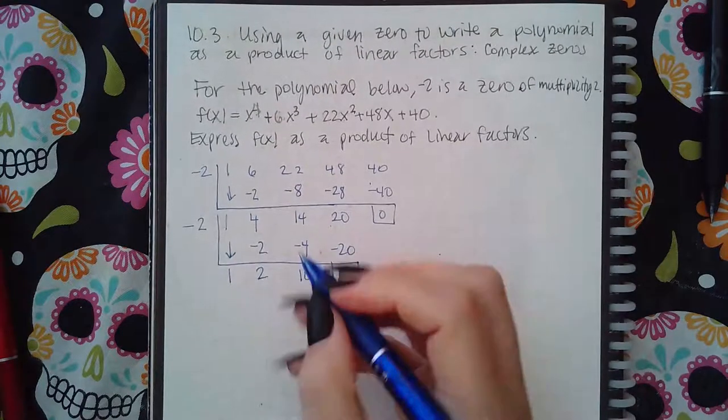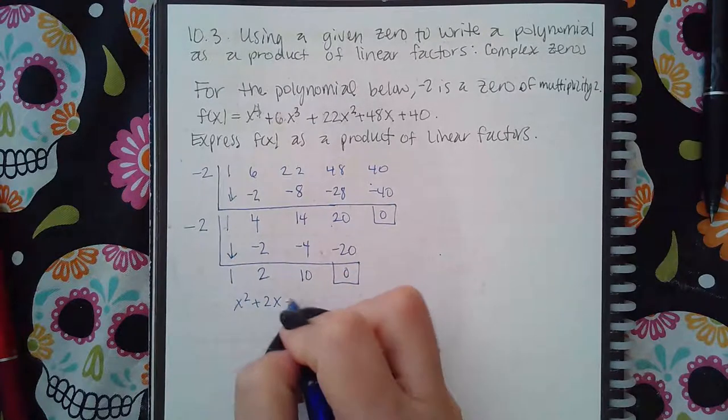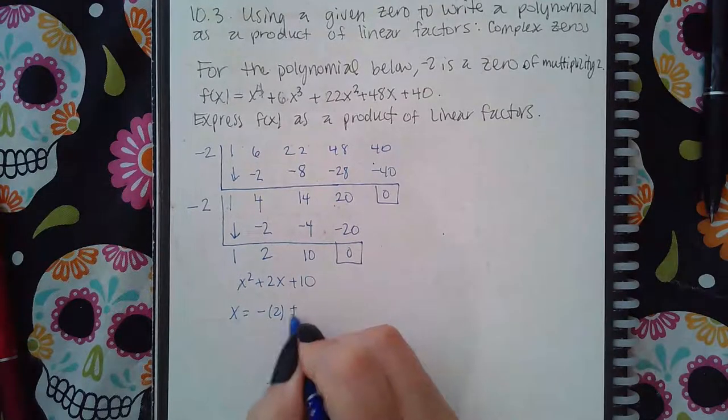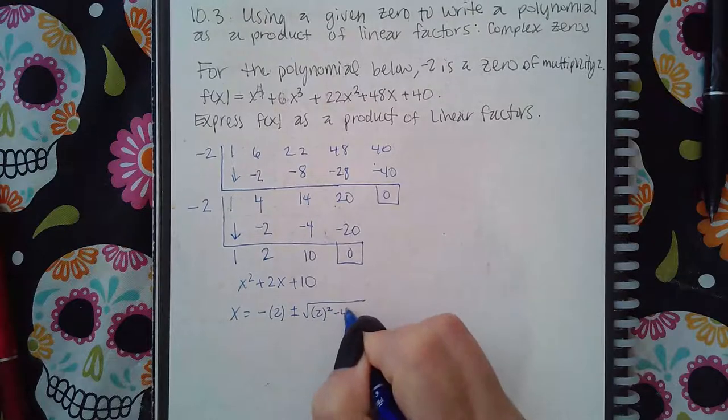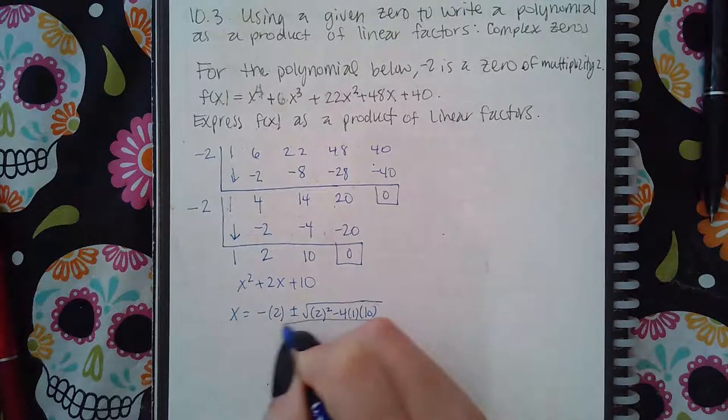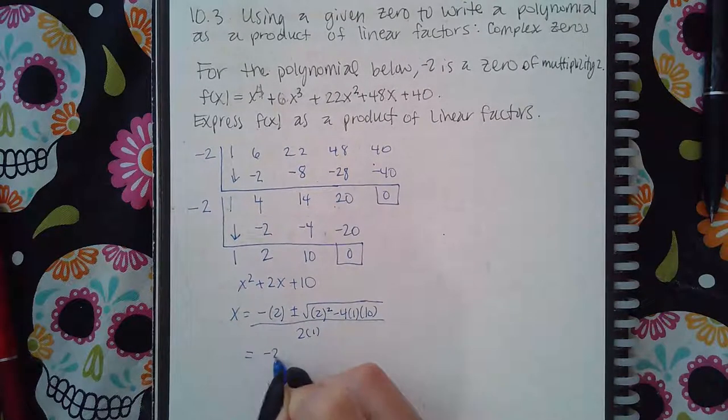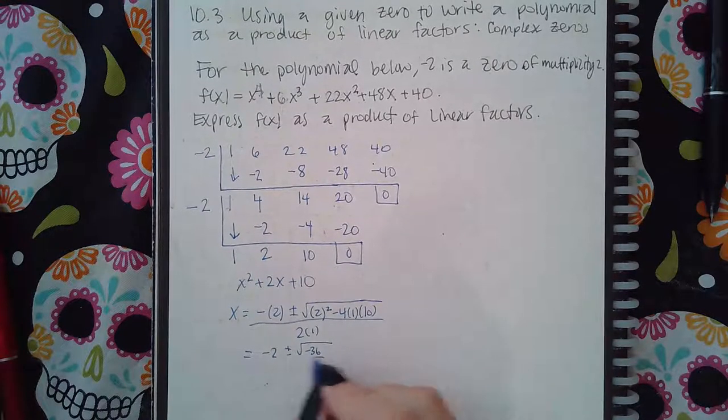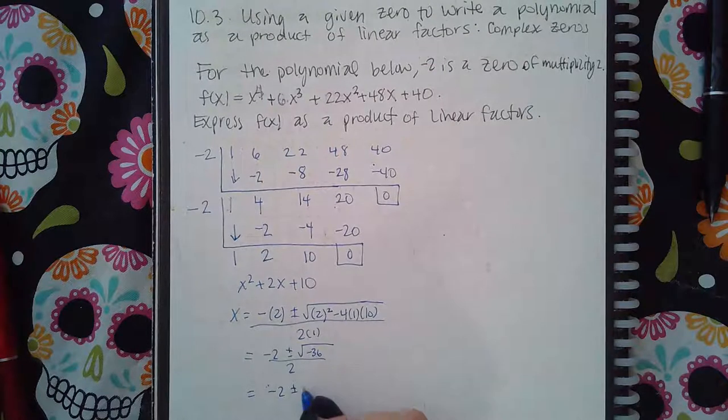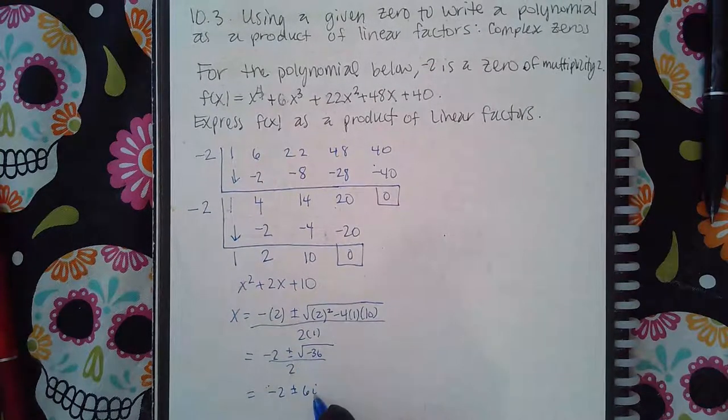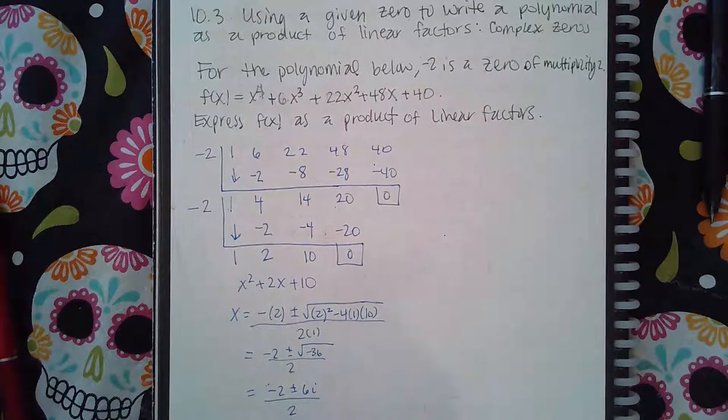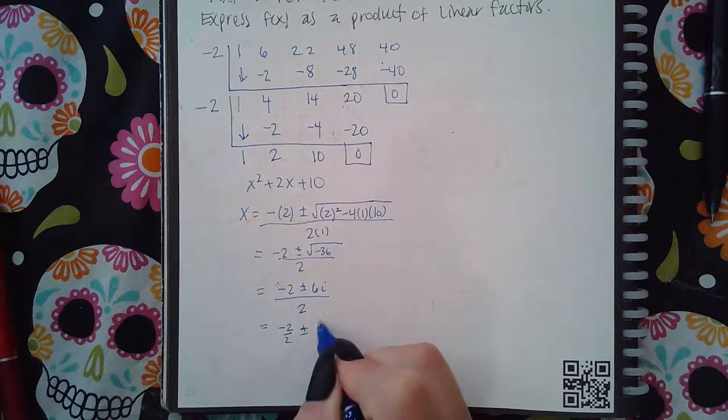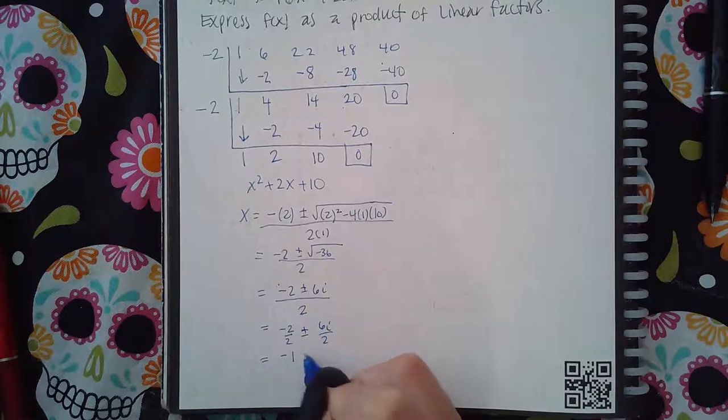Now with this, I have x squared plus 2x plus 10. I can use the quadratic formula with that. So x equals negative b plus or minus b squared minus 4ac all over 2a. So we get negative 2 plus or minus negative 36, which gives me plus or minus 6i, because the negative comes out as an i and the square root of 36 is 6. If I split this, I can write negative 2 over 2 plus or minus 6i over 2, which is negative 1 plus or minus 3i.